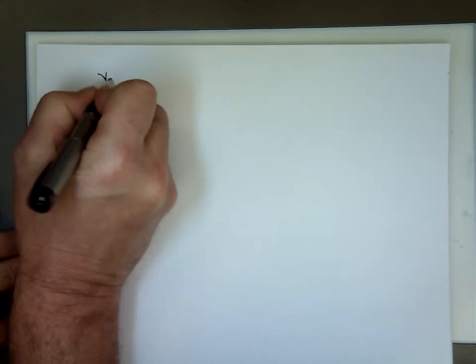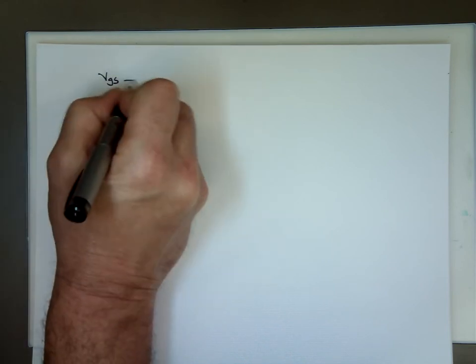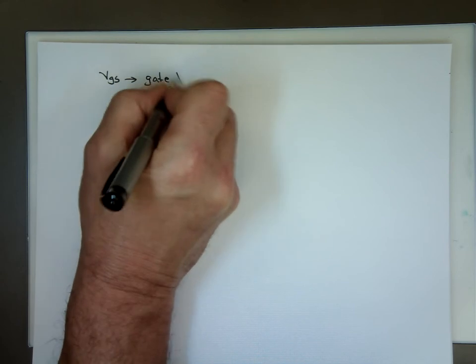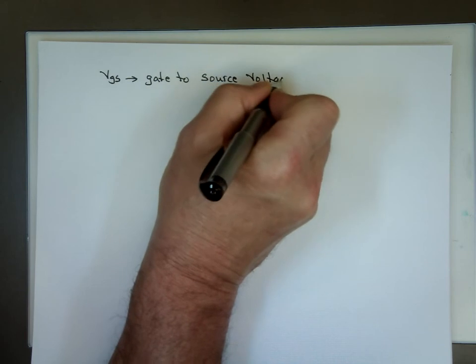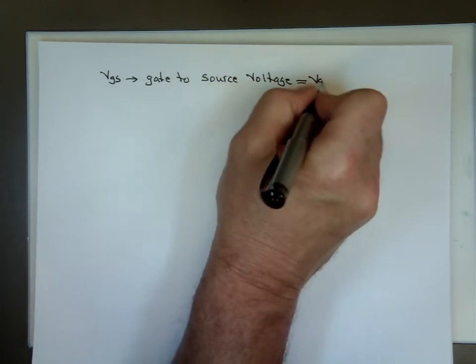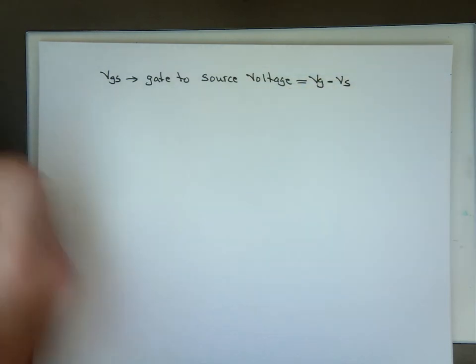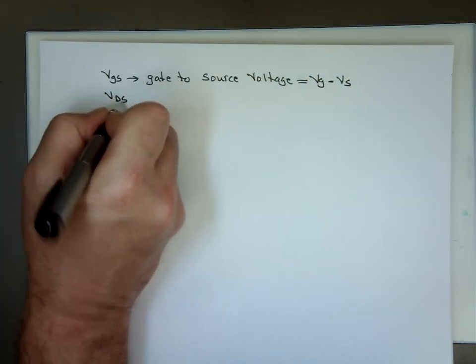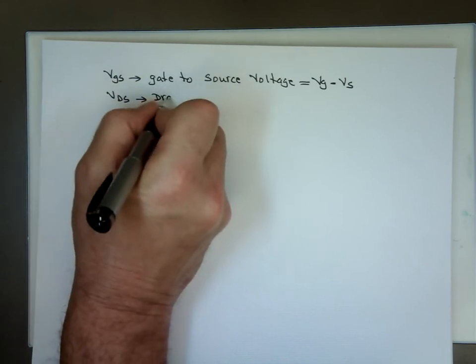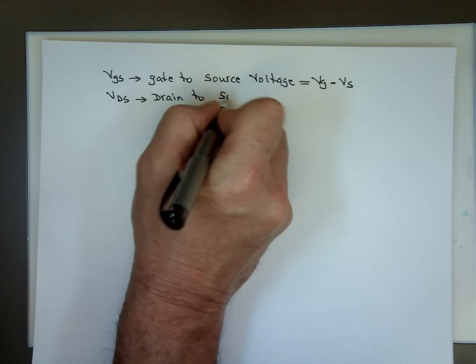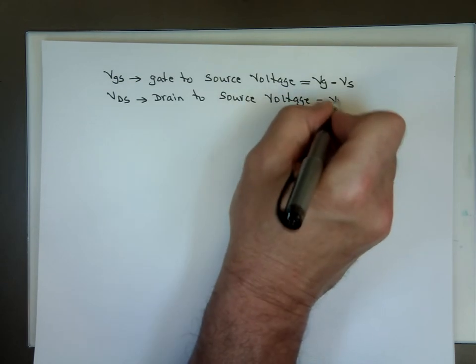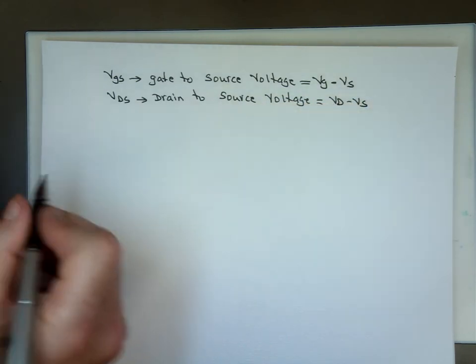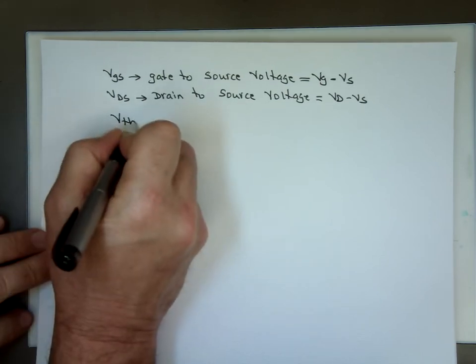So what are they? VGS, that's gate to source voltage, which will be equal to VG minus VS. VDS, drain to source voltage, which is VD minus VS.